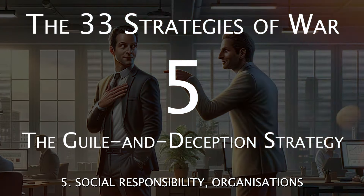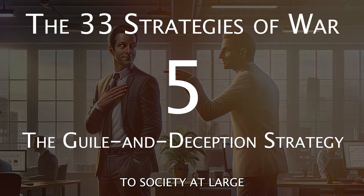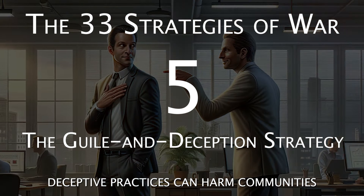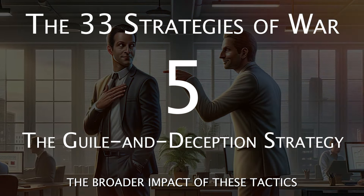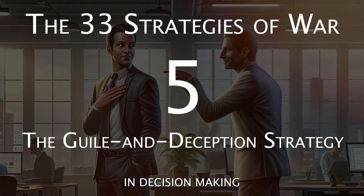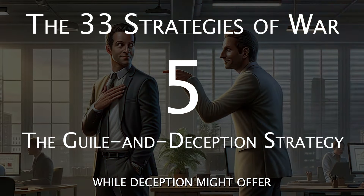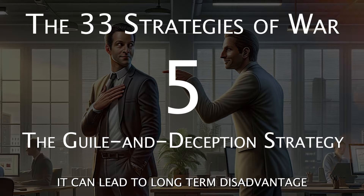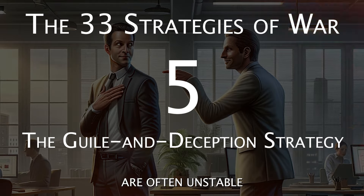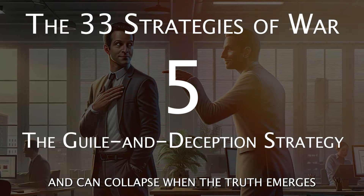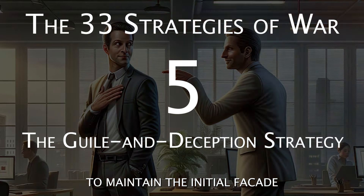Point 5: social responsibility. Organizations and individuals hold a responsibility to society at large. Deceptive practices can harm communities, economies, and the environment, and the broader impact of these tactics should be a consideration in decision-making. Point 6: long-term outcomes. While deception might offer a short-term advantage, it can lead to long-term disadvantage. Relationships built on deceit are often unstable and can collapse when the truth emerges, leading to a cycle of escalating deception to maintain the initial falsehood.